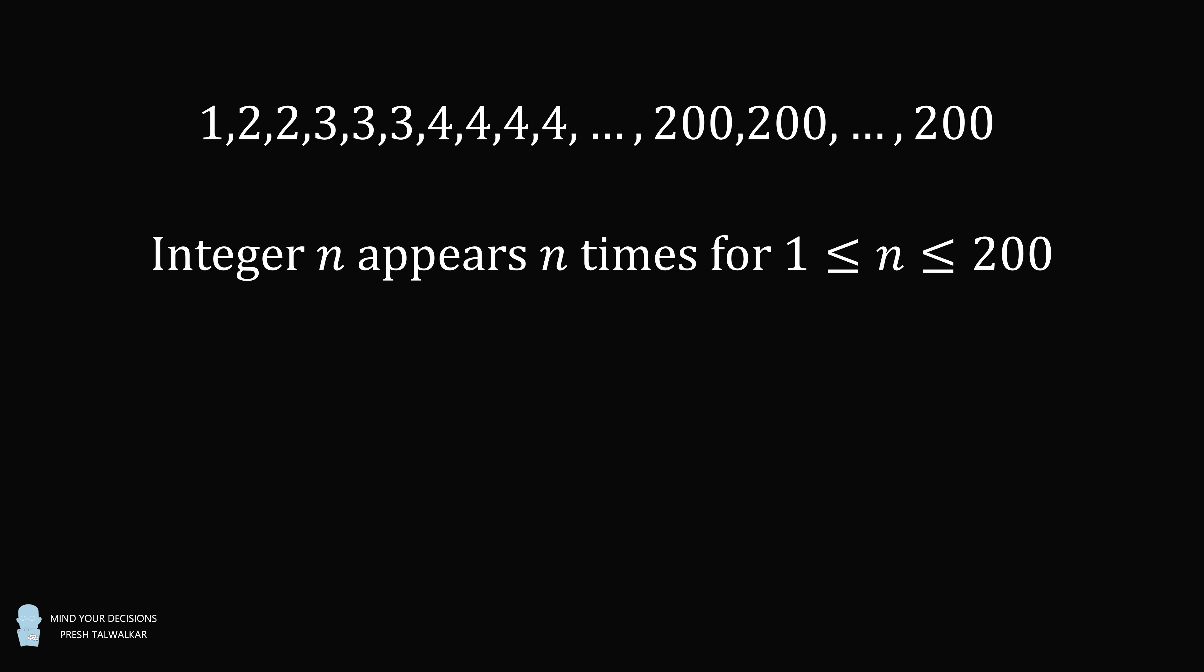In this list, the integer n appears n times for 1 ≤ n ≤ 200. The question is what is the median of the numbers in the list? This is a no calculator question.